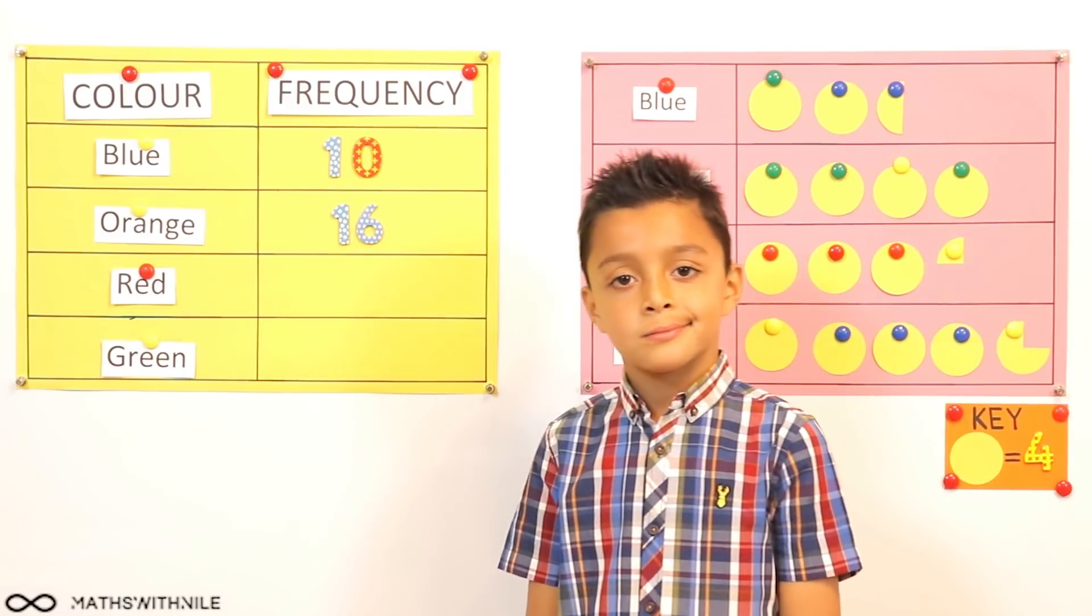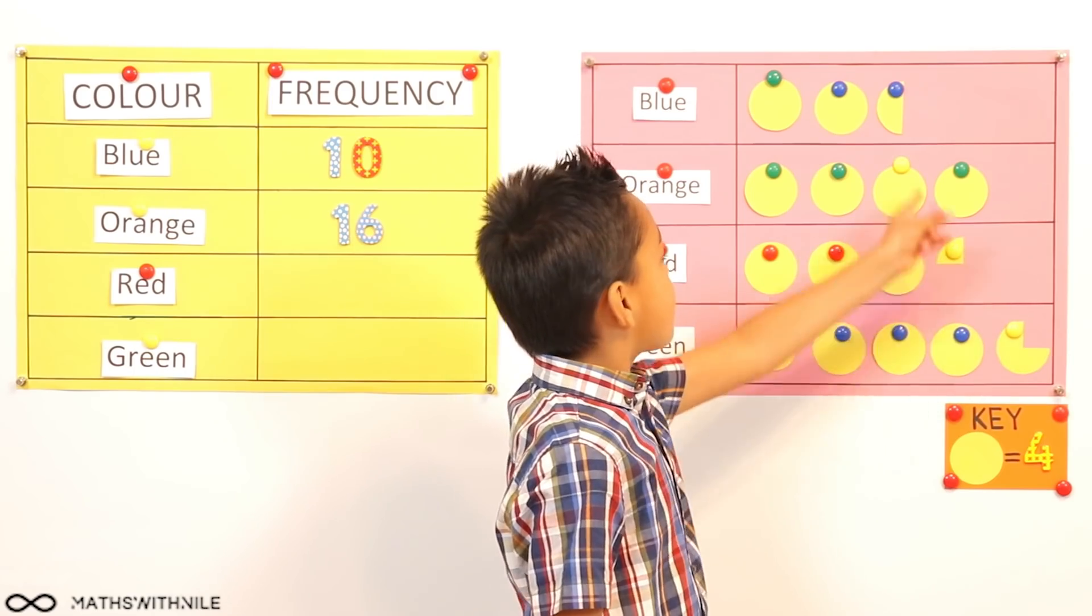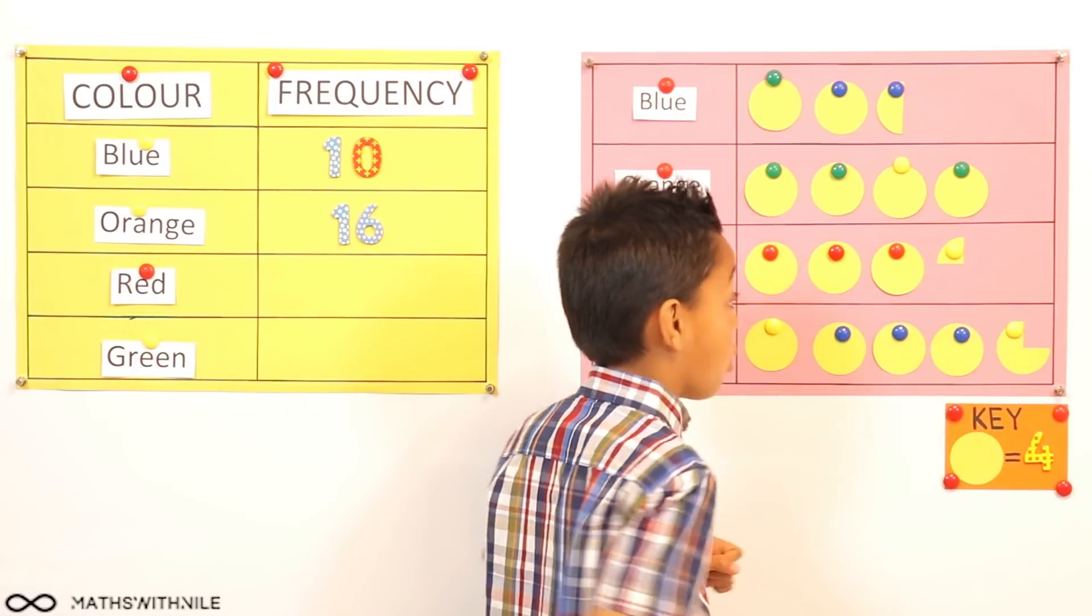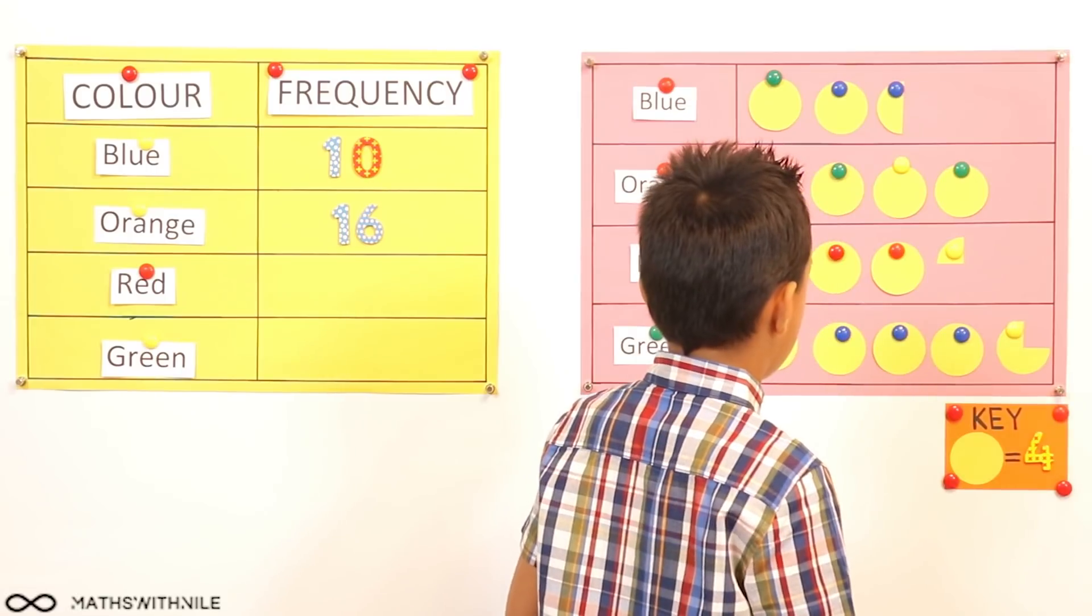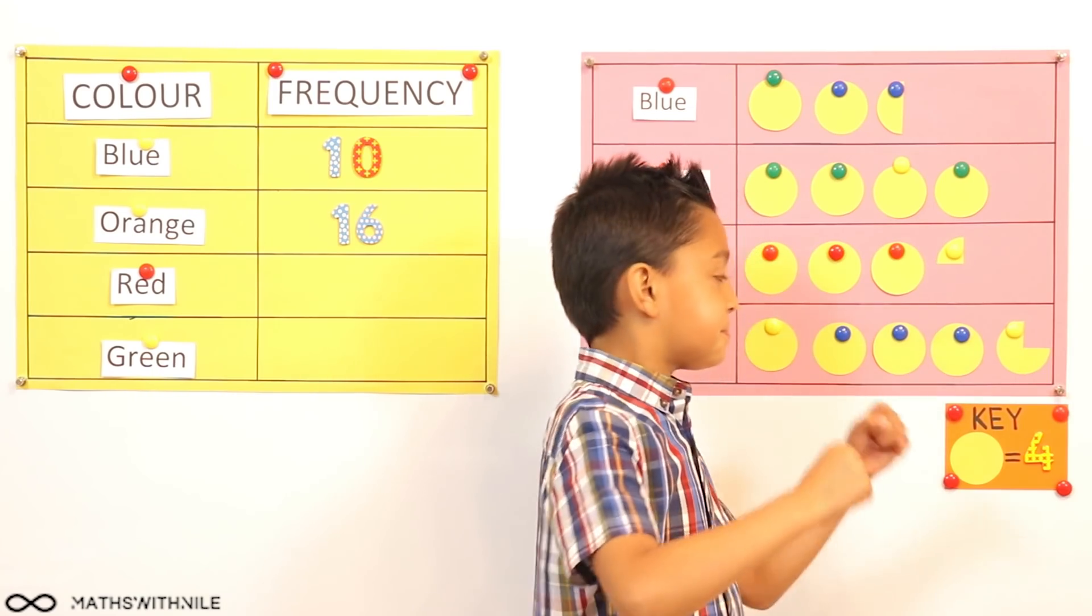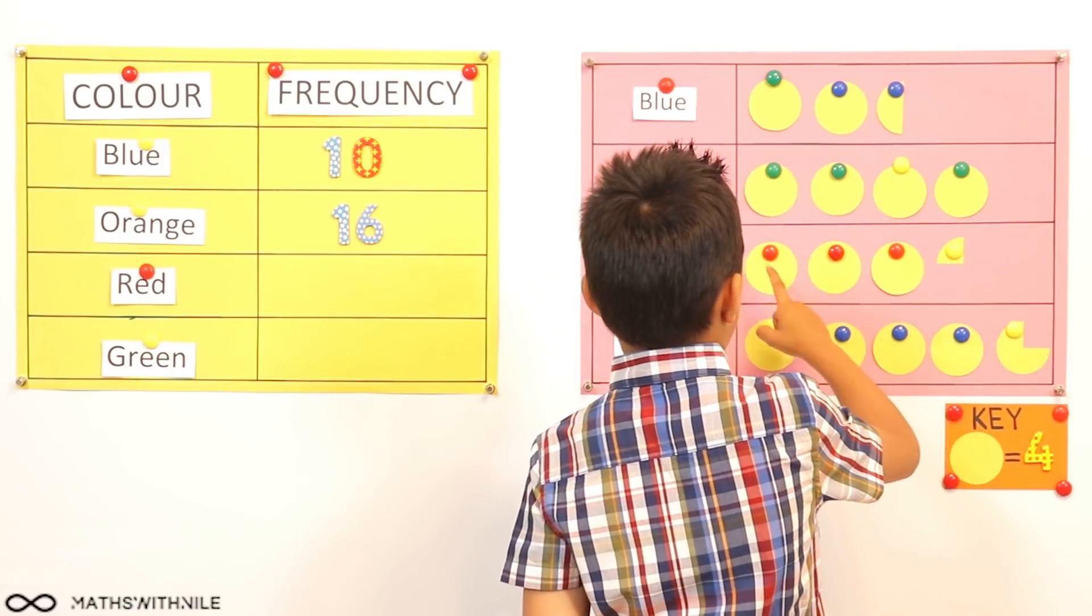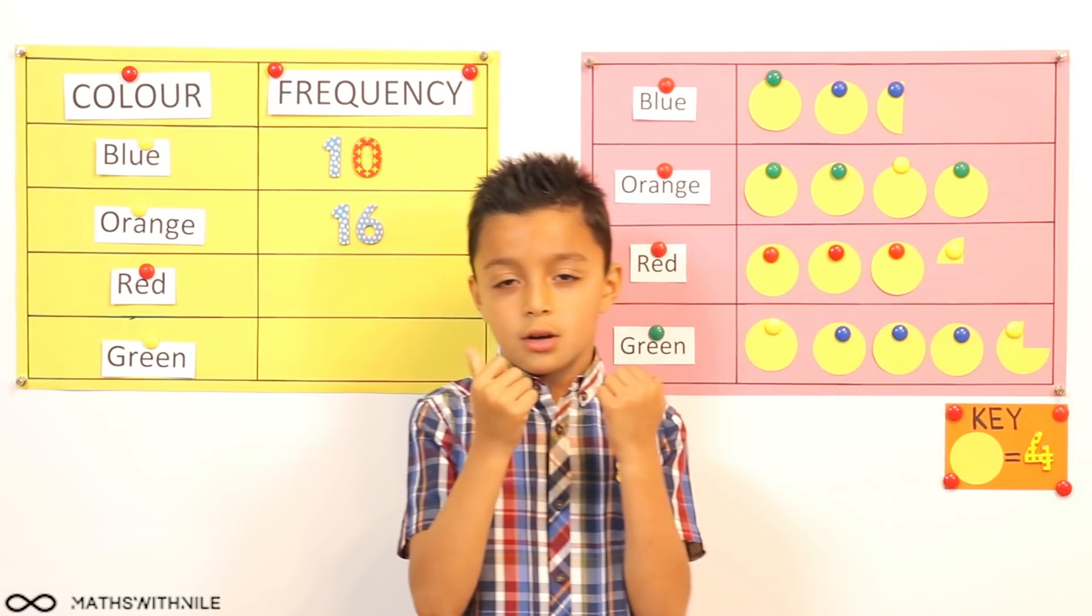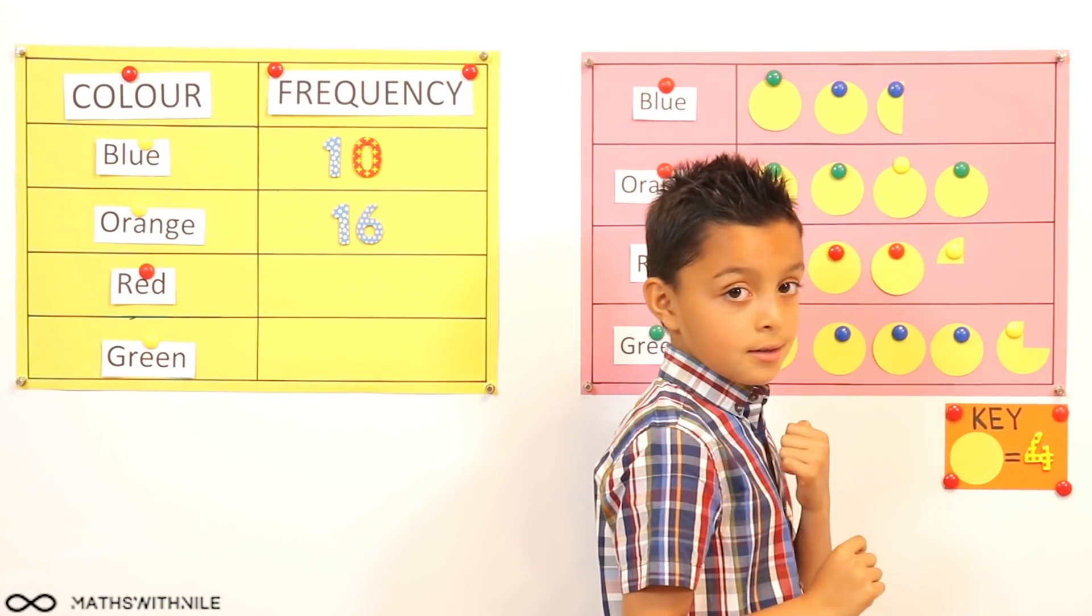And before we work out the red, it's got a very interesting shape at the end there. Yeah, it doesn't have a half. It has a quarter. A quarter. So how much is that quarter going to represent? One quarter of four. One. Good. So can you count up and see how many reds we have? We have four, eight, nine, ten, eleven, twelve, thirteen. Thirteen. Very good.